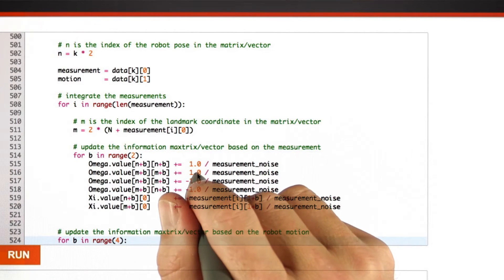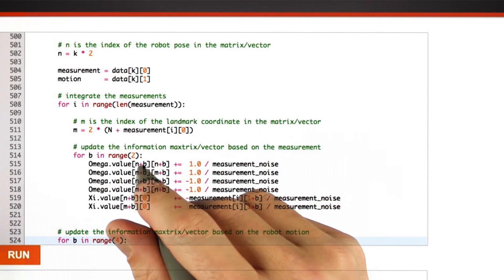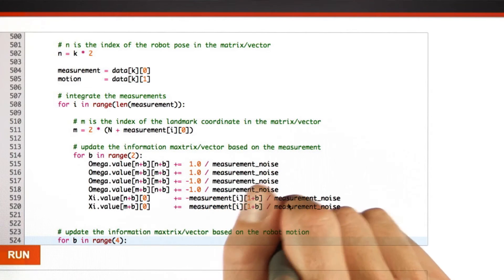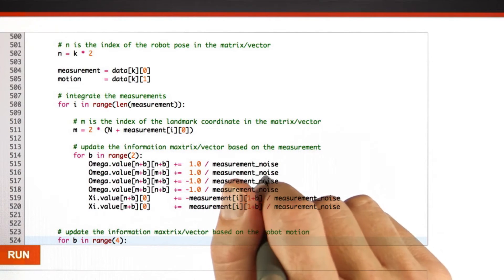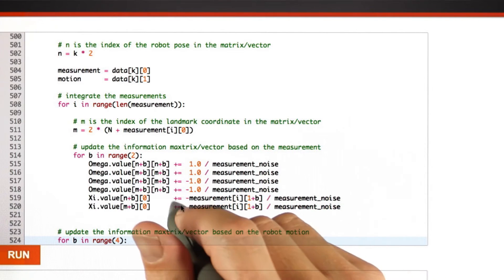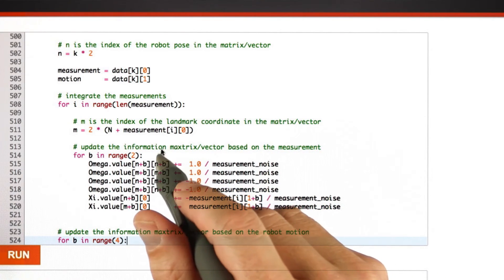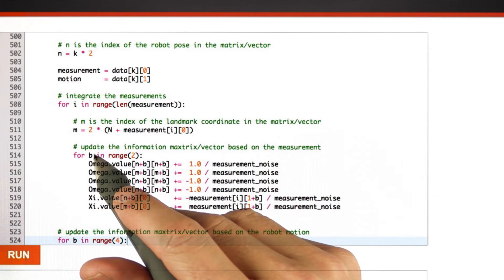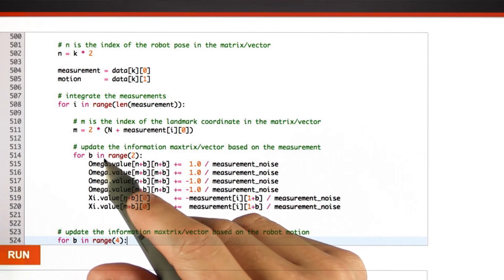And then the next routine just implements the simple addition with the measurement noise as the inverse weighting factor. So it adds 1, 1, minus 1, minus 1, to the corresponding elements in the submatrix. And in the vector, it adds the measurement, all divided by the strength of the noise variable. If you look at this carefully, it'll take a minute to digest it. I'm obviously using the auxiliary variable b to account for the fact there's x and y.